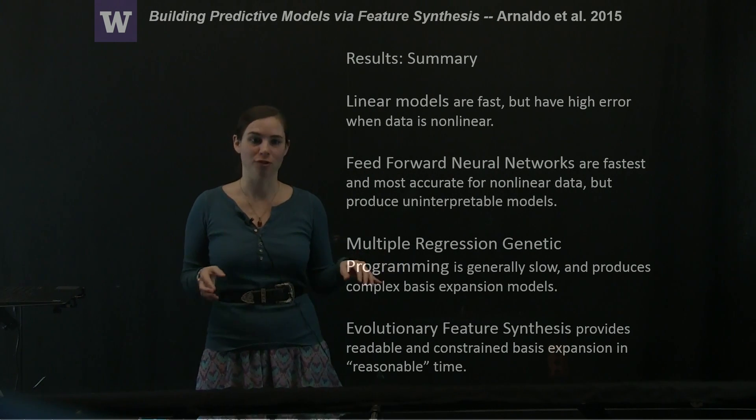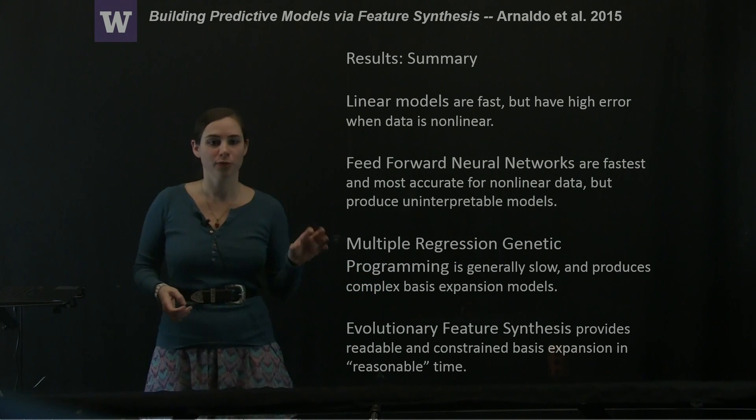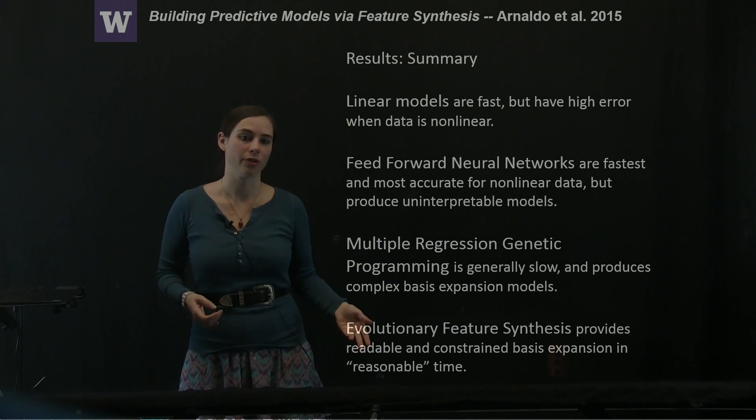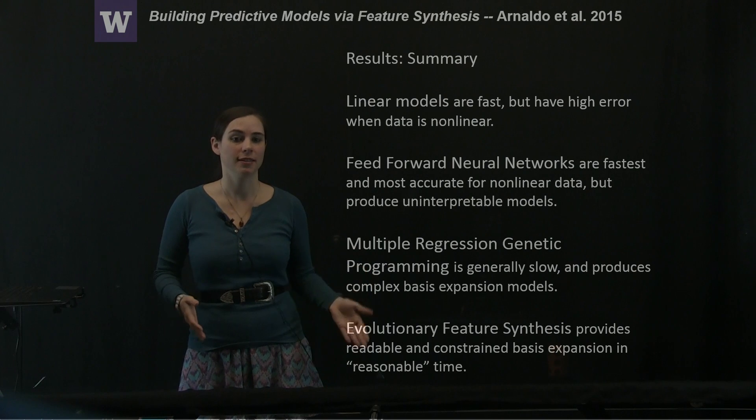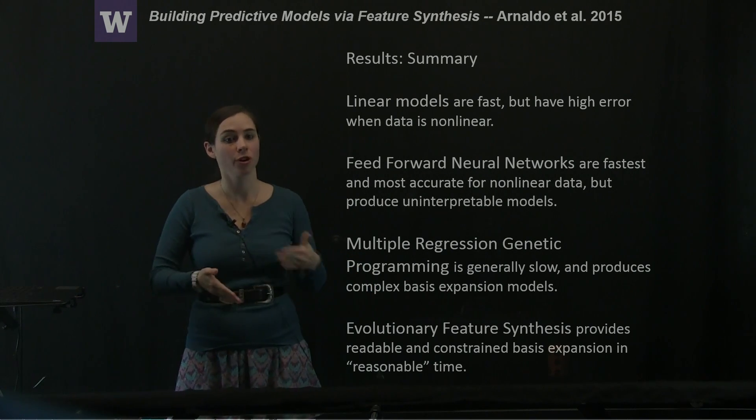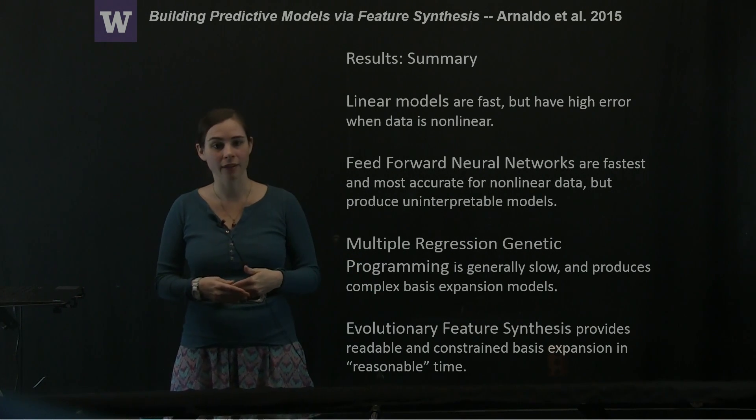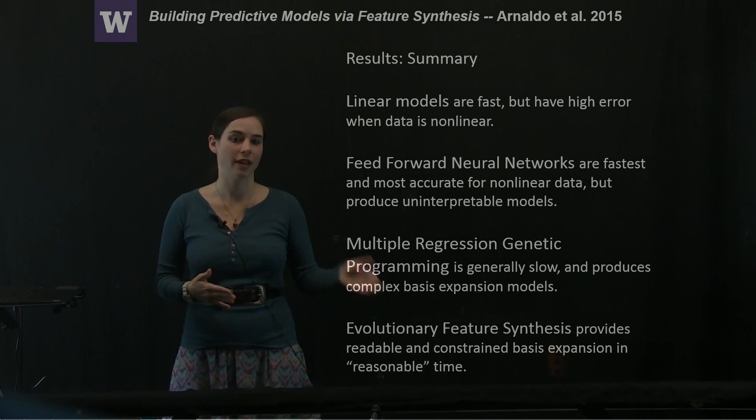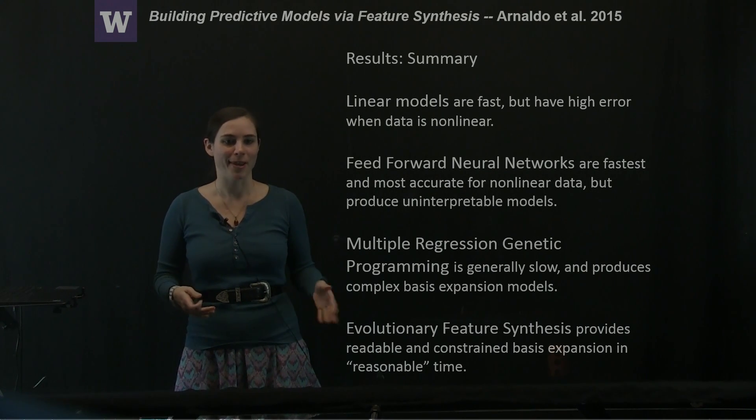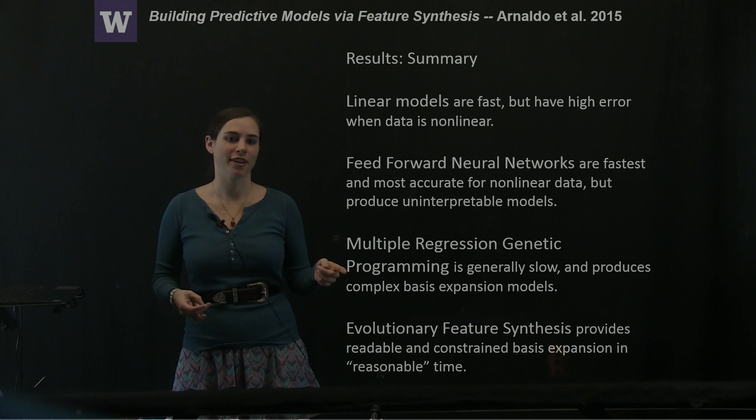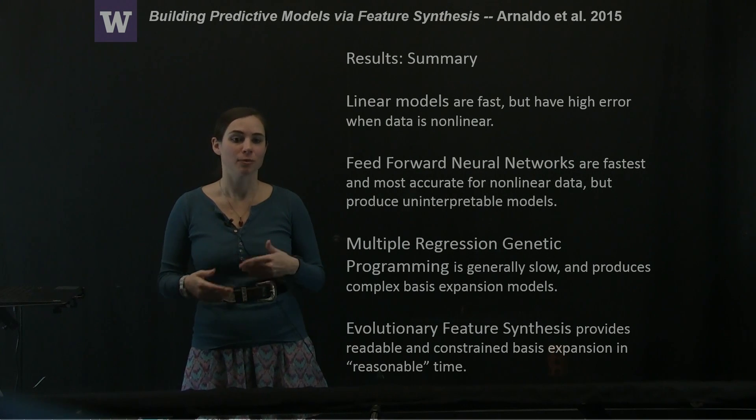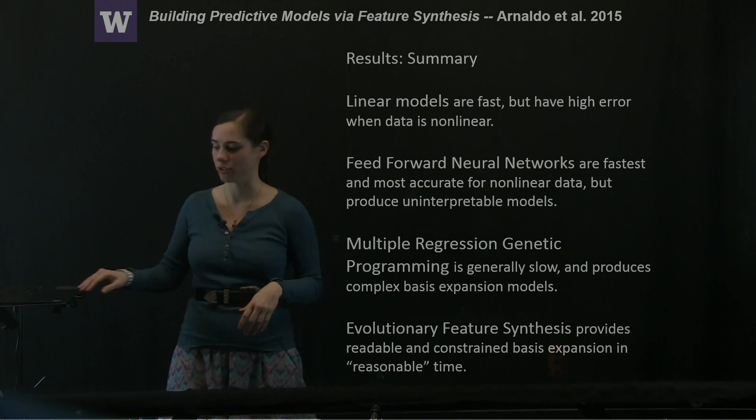This was one of the reasons for using this sort of multiple regression genetic programming or the evolutionary feature synthesis, was that both of these type of methods will produce what is essentially a basis expansion of the model that might be able to be interpreted by domain experts. And the authors have shown that basically this evolutionary feature synthesis method not only produces basis expansion faster than the multiple regression genetic programming method, but it produces a more constrained expression, which means that it's probably even more readable than the multiple regression genetic programming.